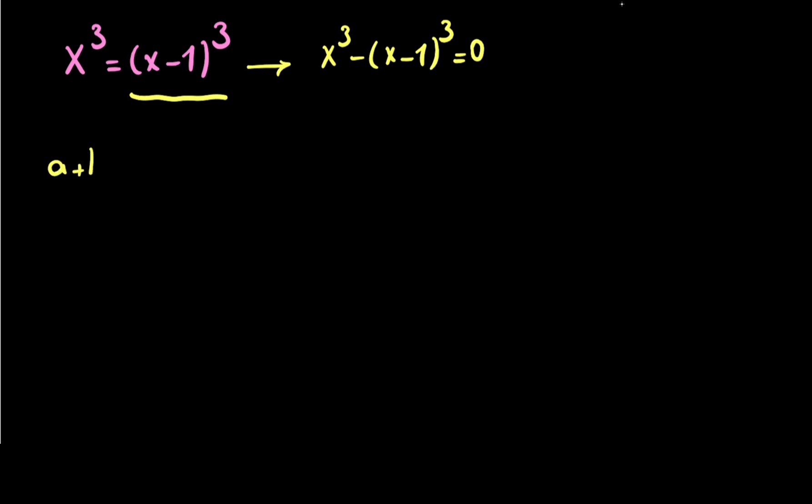Before I solve it, you know that if you have (a+b)³, then you can write a³ + b³ + 3a²b + 3ab². And if you have (a-b)³, then the answer will be a³ - b³ + 3b²a - 3a²b.